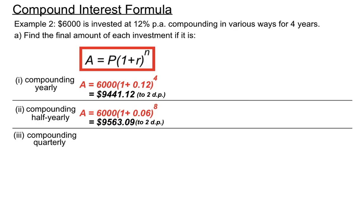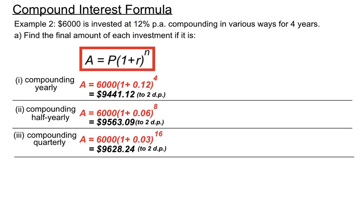Let's look at another adjustment — if it compounds quarterly. We need an interest rate per quarter and how many quarters are in four years. If there's 12% per annum, each quarter earns a quarter of that — so 0.12 divided by 4. And there are four quarters in one year, so in four years there are 16 quarters. We've adjusted both the interest rate and the number of time periods. As expected with more compounding periods, the amount has grown to $9,628.